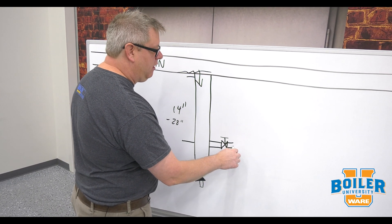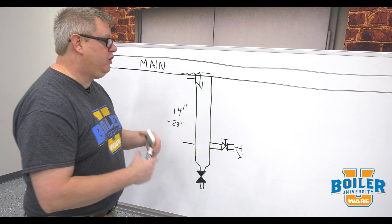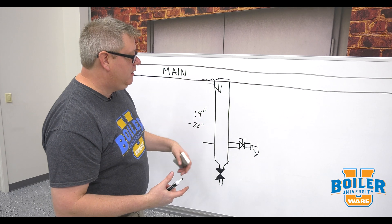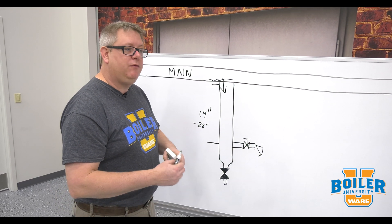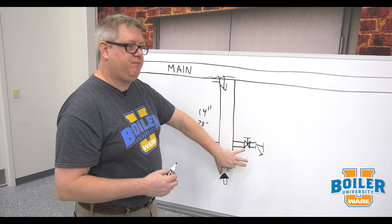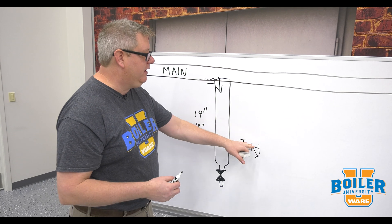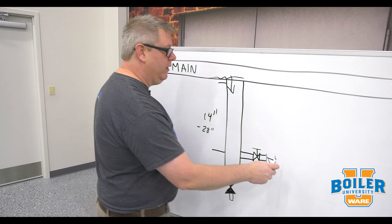After that isolation valve we want to have a strainer. A strainer protects the trap from debris that comes in and some traps have strainers integrated. If you're putting in a new drip leg feel free to use that integrated strainer. If there's an existing strainer I'm never going to take that out regardless of what type trap I'm putting in.